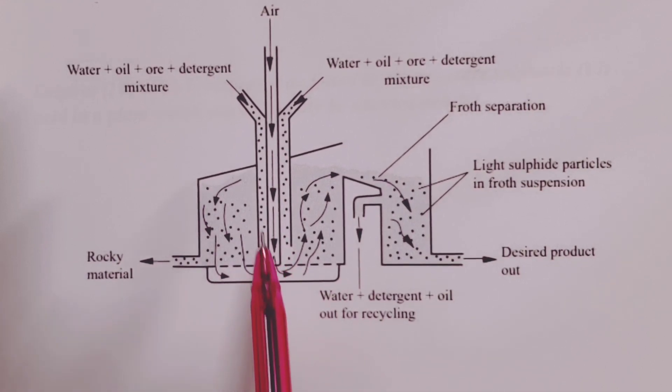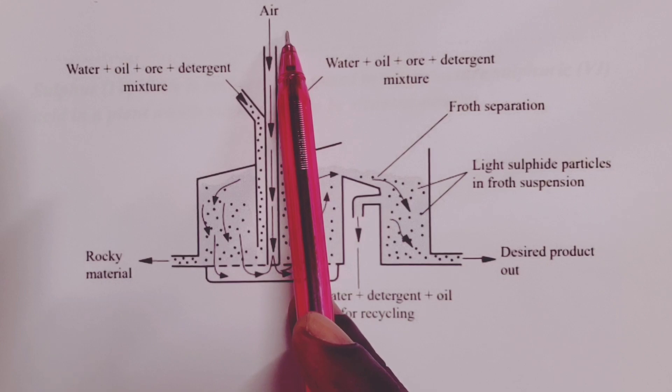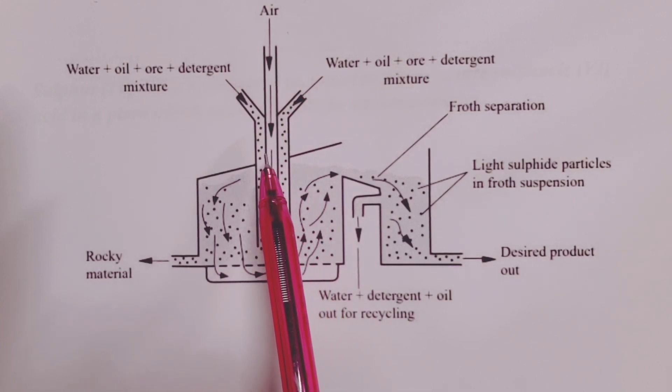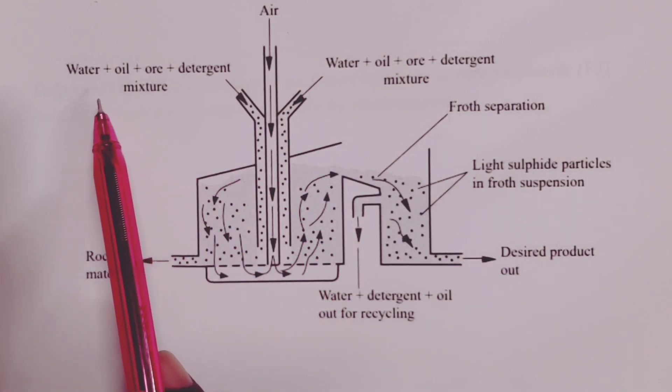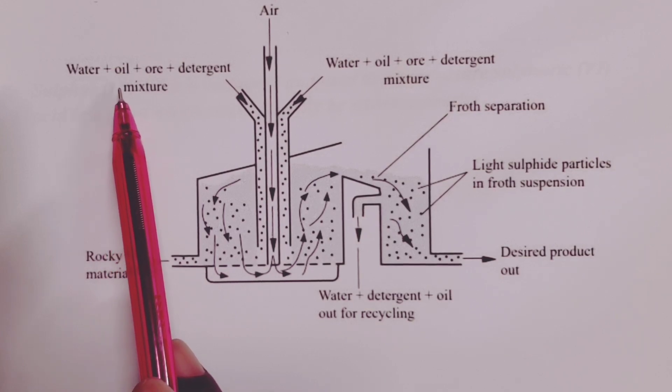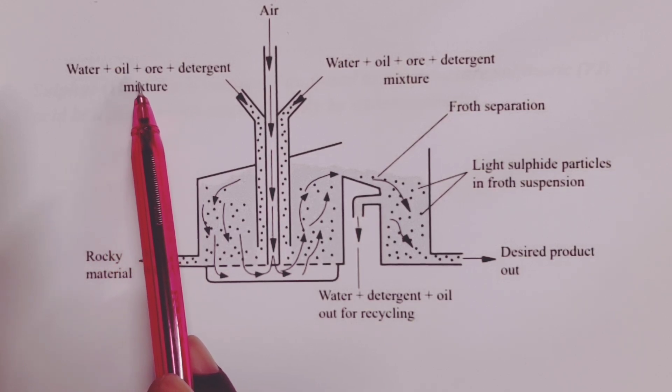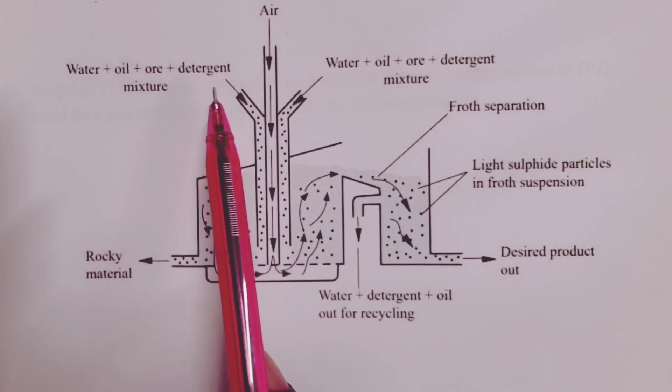Now, compressed air is then blown through the mixture. Of course, the mixture here has water, oil, ore, and some detergent.